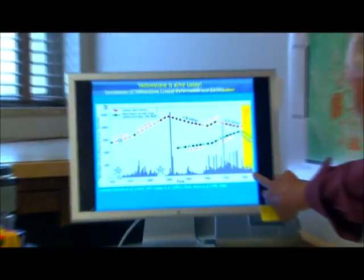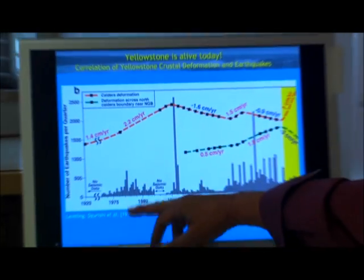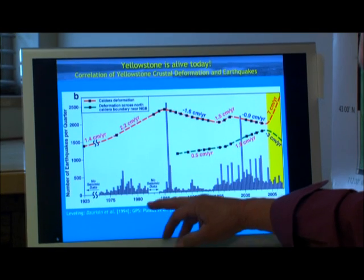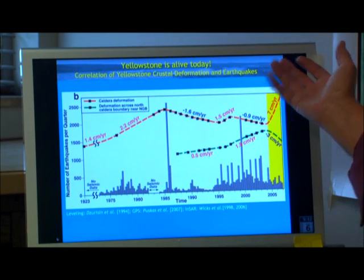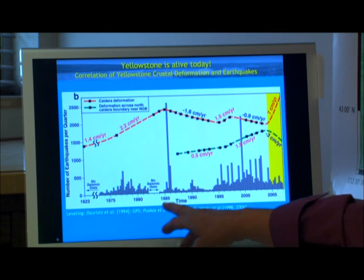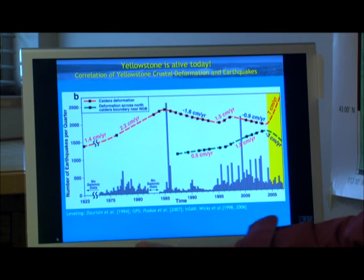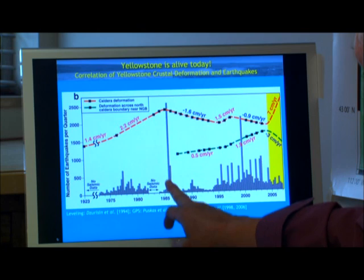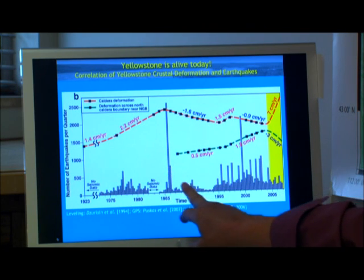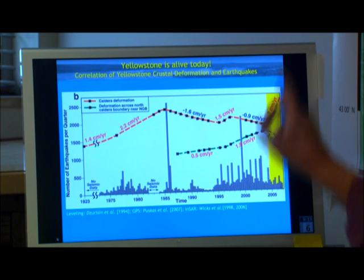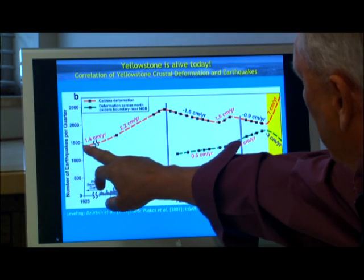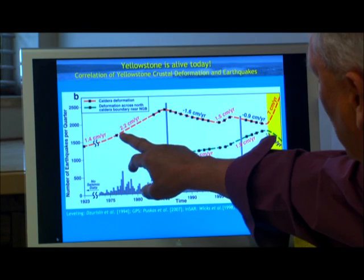1923 to 2007 earthquakes by quarter are shown in gray, and you can see the natural background—we get 1,000 to 3,000 earthquakes a year beginning back in '73. In 1985 we had a big earthquake swarm, things died down, and then in 1995 things picked back up and they've died down again.